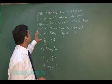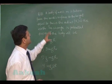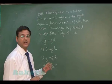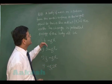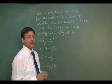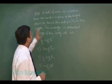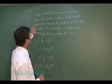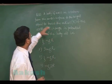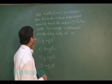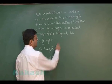Question 173 is based on the chapter gravitation, in which the increase in potential energy has been demanded. A body of mass m is taken from the earth surface to a height equal to twice the radius R of the earth.